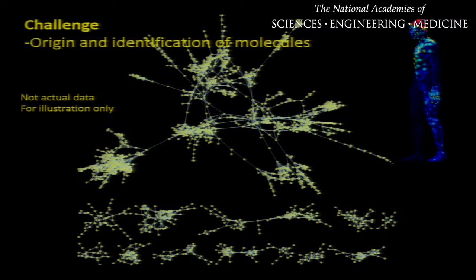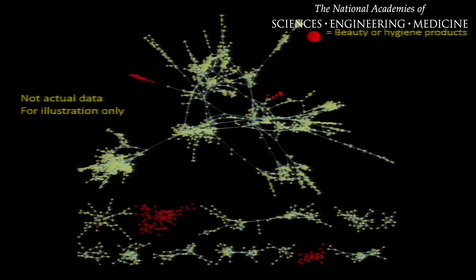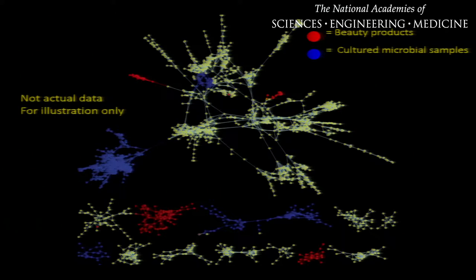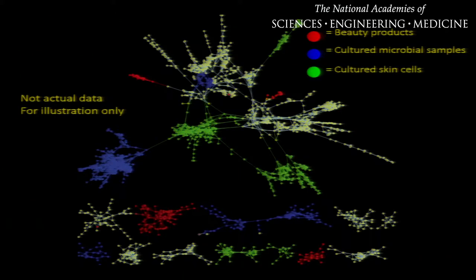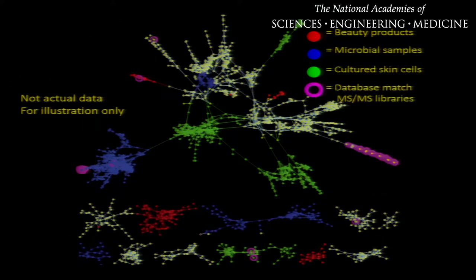Let me explain this by taking the example of human skin. The molecules on human skin are coming from, for example, beauty products we use. So we can acquire mass spec data on these beauty products and feed it to our network to visualize those molecules. Similarly, microbial molecules can be visualized by culturing microbes in the lab and feeding the data to our network. Human molecules can then be visualized by culturing skin cells in the lab. In order to identify what these molecules are, we match our entire data sets against the MS-MS libraries.